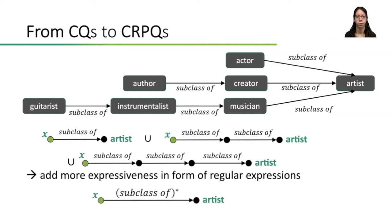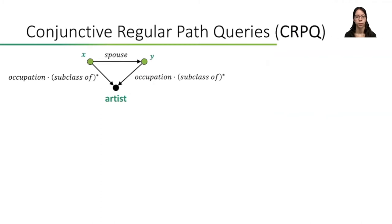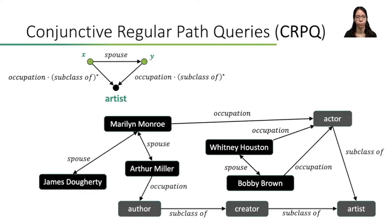Therefore, it is useful to add more expressiveness to the queries, for example in the form of regular expressions. And this brings us to conjunctive regular path queries, or short CRPQs. We can represent CRPQs with the same graphical representation as CQs, but now the edges can be labeled with arbitrary regular expressions. This CRPQ here asks for spouses X and Y, whose occupation is a transitive subclass of artist. If we want to evaluate this query, we need to find X and Y, such that there is an edge labeled spouse from X to Y and paths from X to artist, which are labeled occupation followed by arbitrary many subclass of edges, and the same for Y.